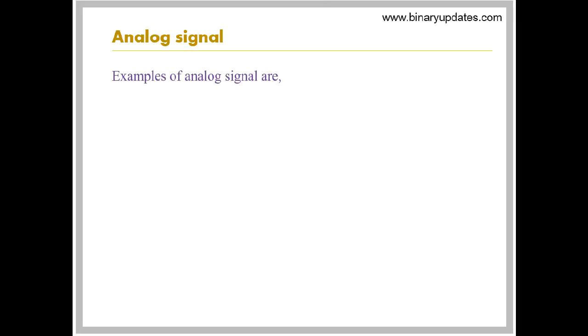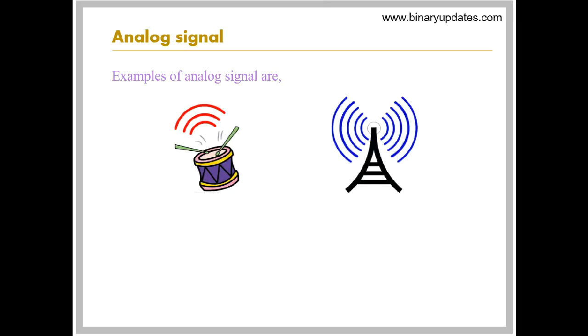Examples of analog signal are drumming sound, signals from antenna, EKG that is electrocardiogram signal.